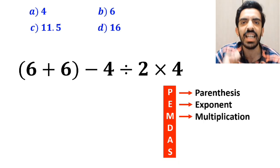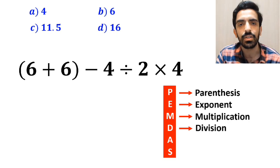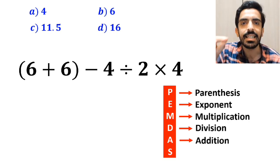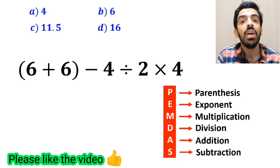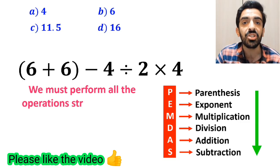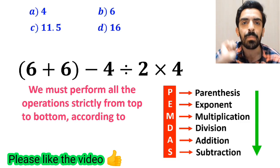D stands for division, A stands for addition, and S stands for subtraction. We must perform all the operations strictly from top to bottom according to the PEMDAS rule.